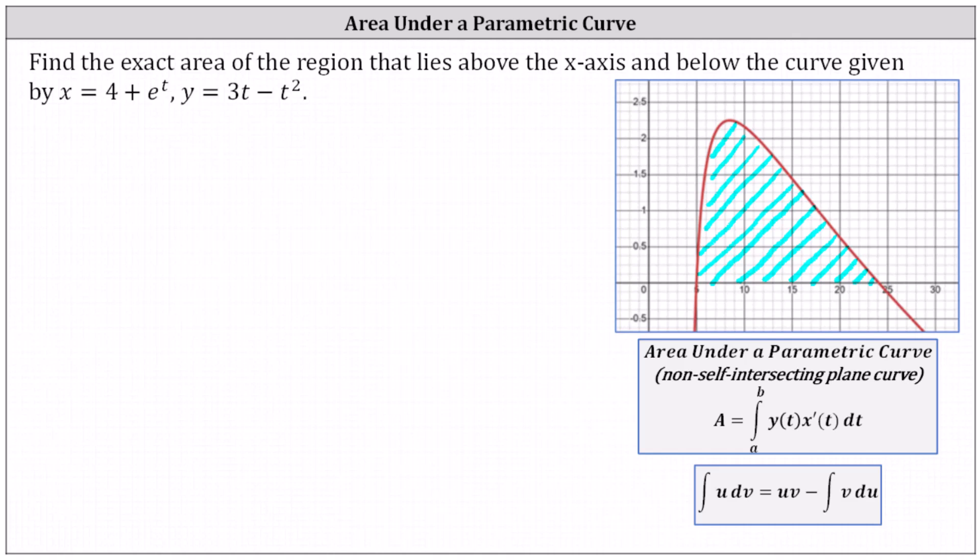Find the exact area of the region that lies above the x-axis and below the curve given by the parametric equations x equals four plus e to the t and y equals three t minus t squared, which I've already graphed in red here on the right. This indicates our goal is to find the area of this bounded region.